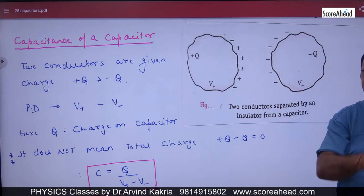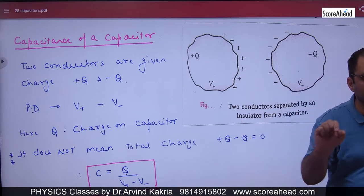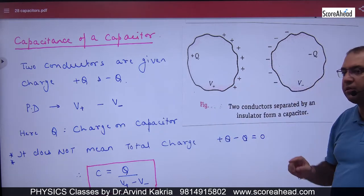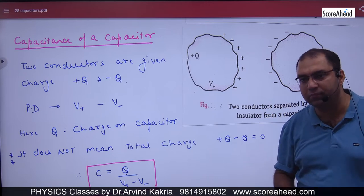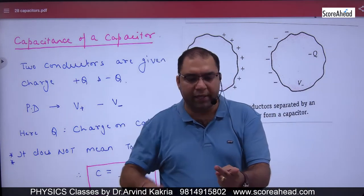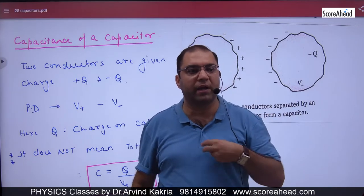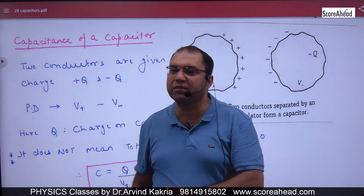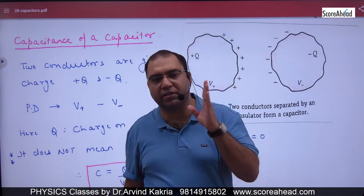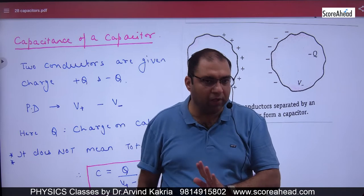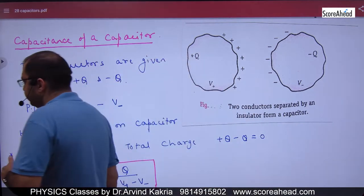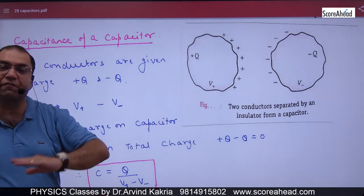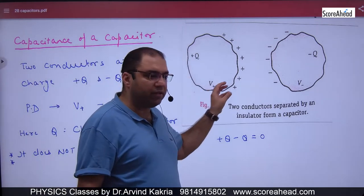We label the potentials V-plus and V-minus. The body with positive charge is at positive potential V-plus, and the body with negative charge is at negative potential V-minus. If we ask what the potential difference between them is, you will say V-plus minus V-minus.